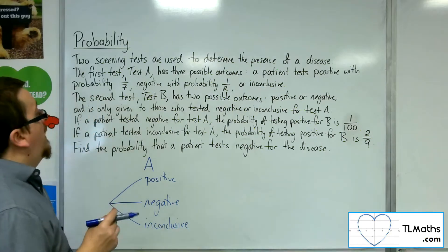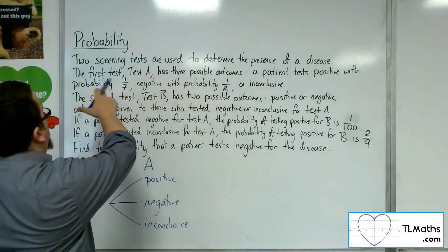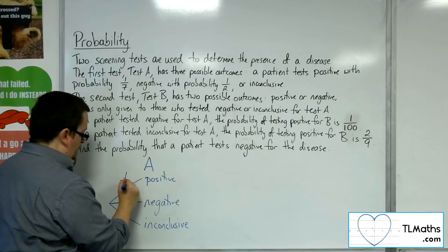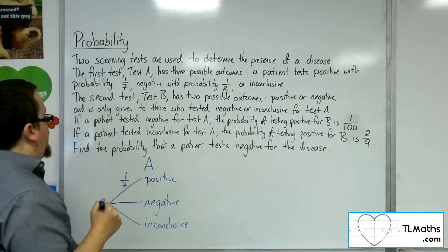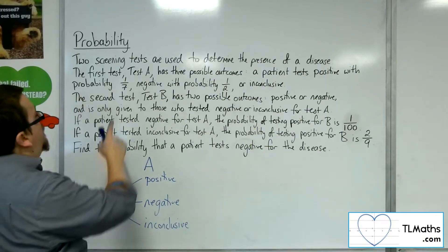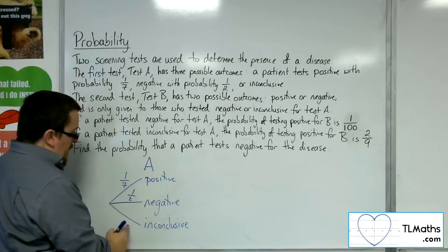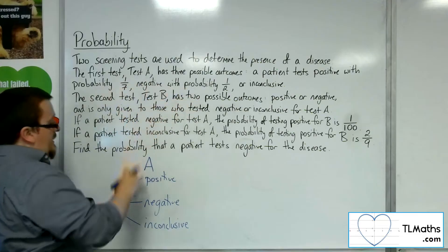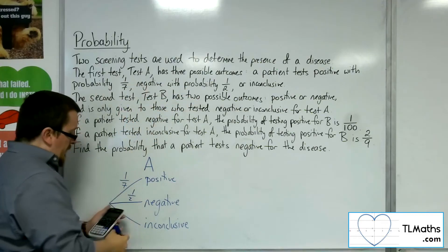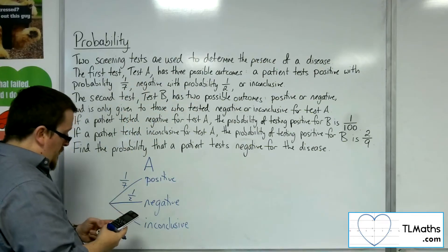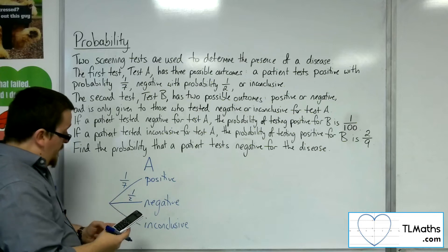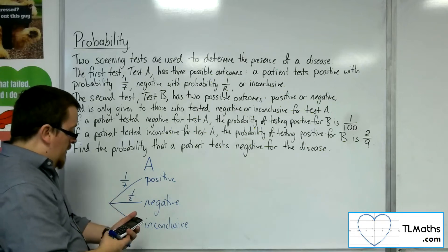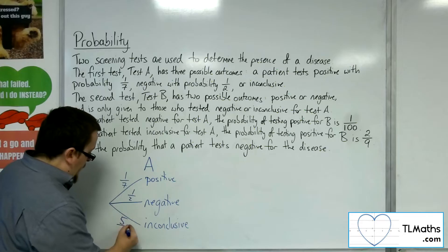Okay, so the probability of a patient testing positive was one-seventh. The probability of a patient testing negative is one-half. So, the probability of a patient testing inconclusive is not identified, so we need to work that one out. So, it would be one take away one-half take away one-seventh. So, that would be five-fourteenths.